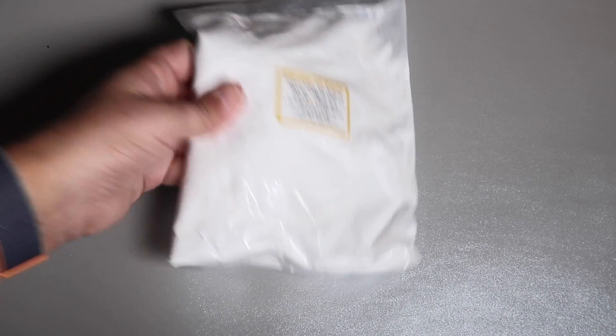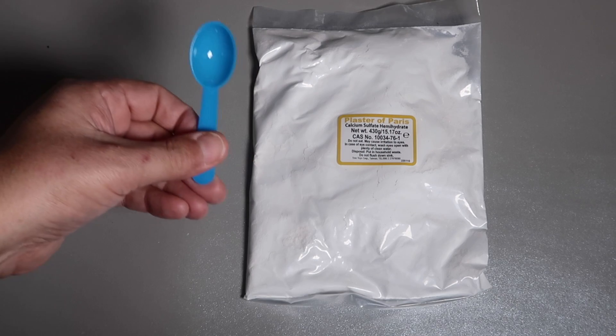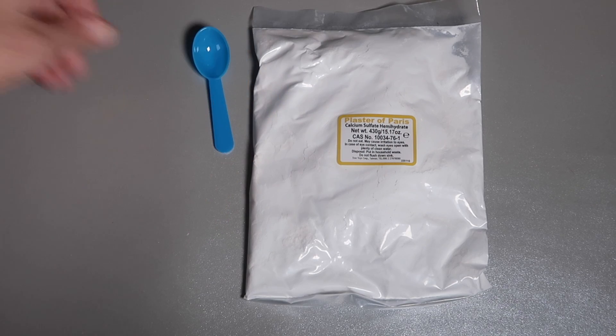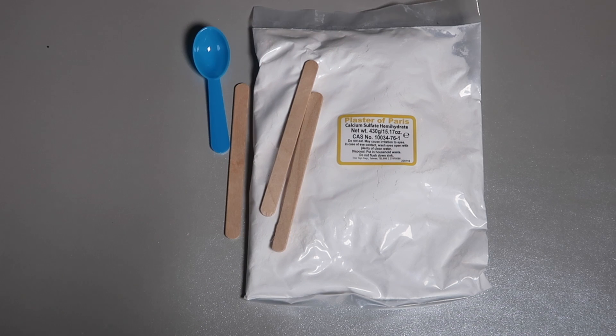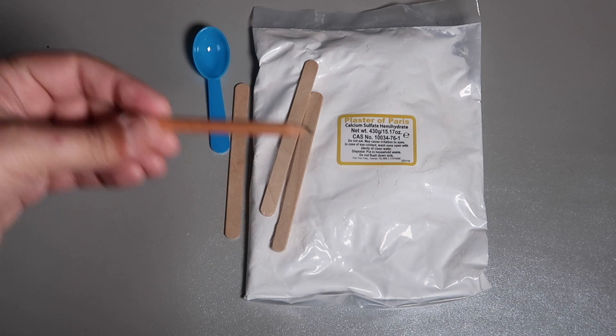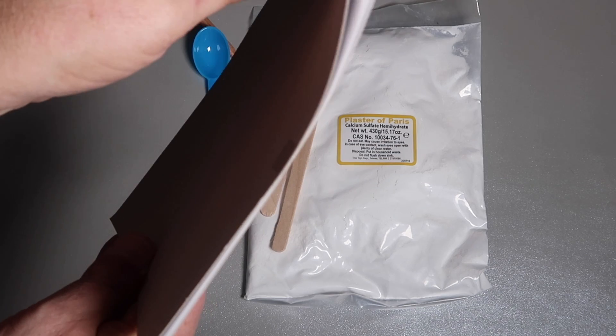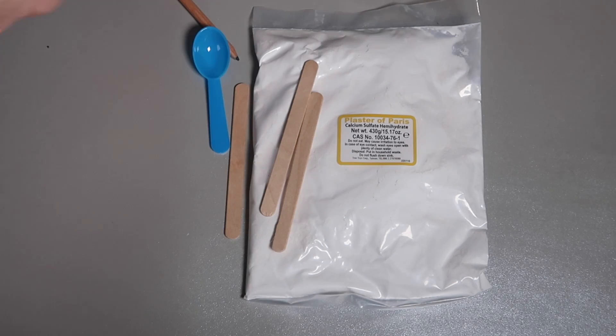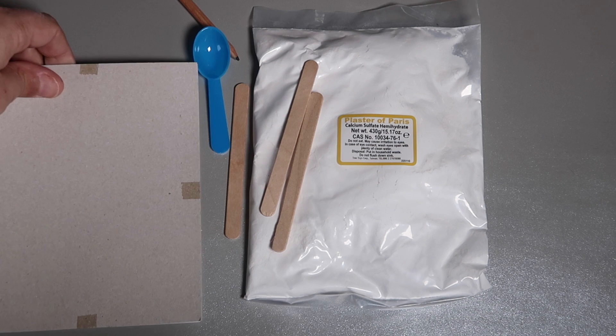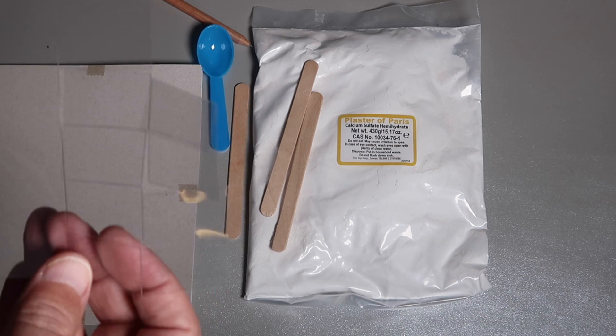Inside the footprint analysis bag is a huge bag of plaster of Paris, stirring sticks, a series of tracing paper protected inside this cardboard, and a sheet of plastic slides.